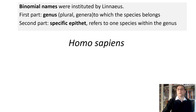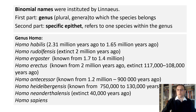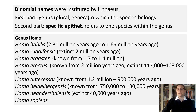As mentioned earlier, the name of our species is Homo sapiens, so we belong to genus Homo. How many species are in this genus? About nine species are known so far, but only one is still around — Homo sapiens. The rest have all become extinct; only their fossils are found.